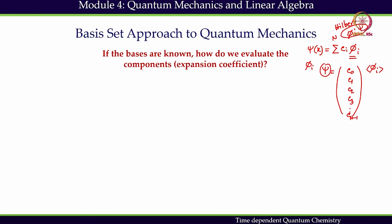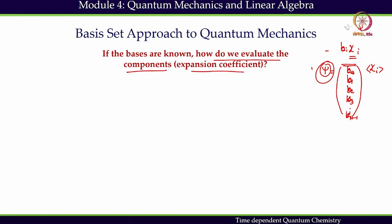If I change the basis to something else, say chi, then the coefficients will also change to b_i. However, the wave function remains the same. Which basis we use to represent the wave function does not matter. All we need to think about is what kind of coefficients we get. The question is: how do we evaluate the expansion coefficients if the basis is known? That is the point we are going to address here.